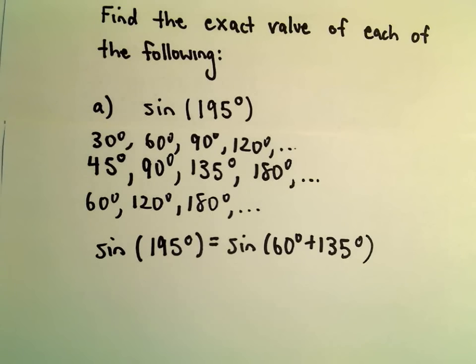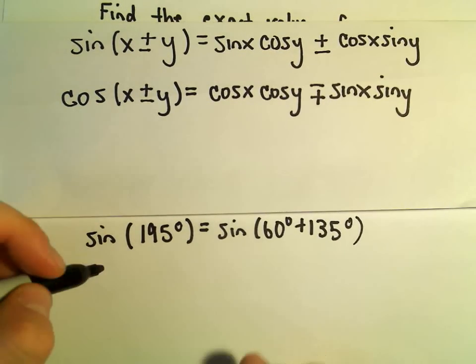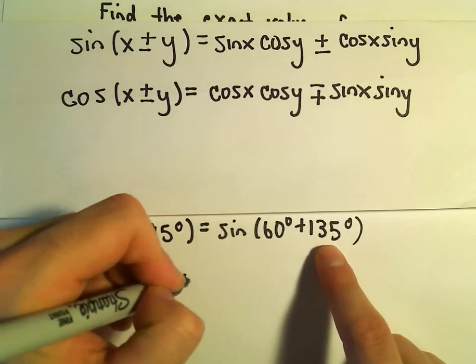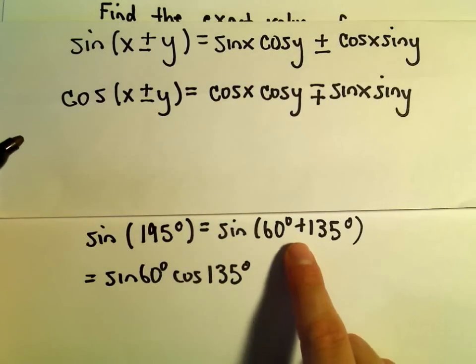And now we just have to use our identity. Recall our sum identity for sine here. It says we just take sine of the first one, 60 degrees. We take cosine of the second one, 135 degrees. Since there's a plus in between, we keep that.